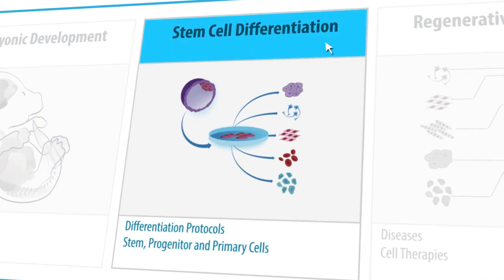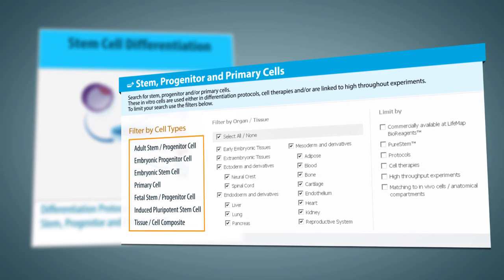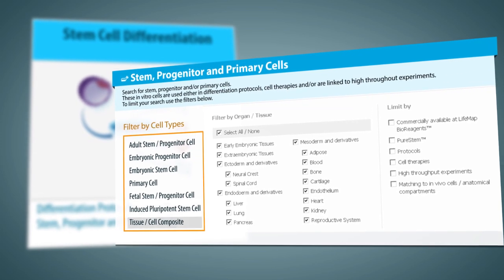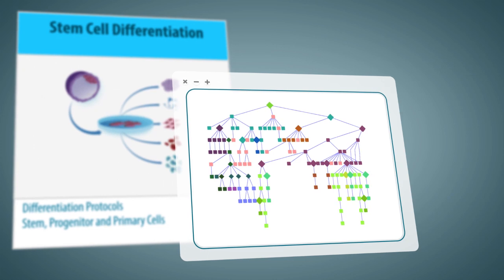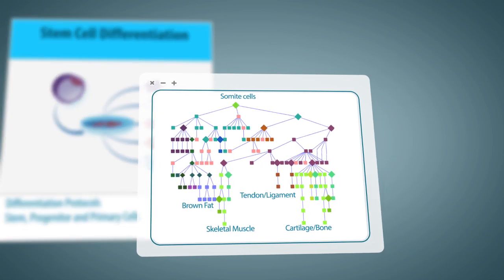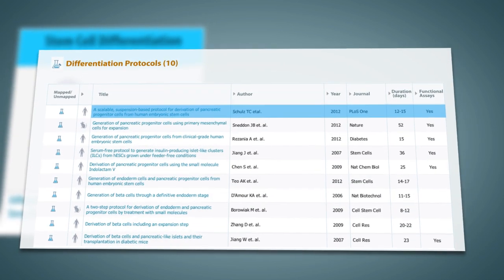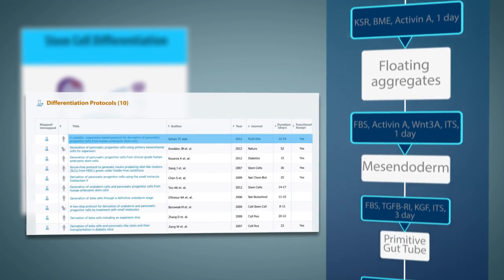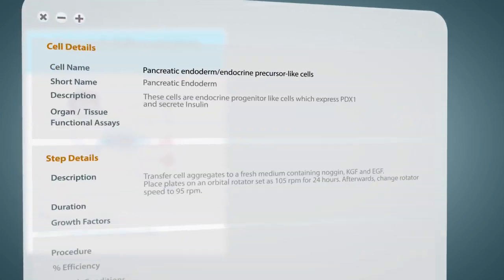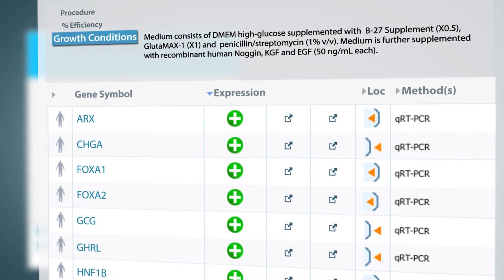Now let's explore our stem cell differentiation module. Our stem cell section provides molecular information for various types of stem, progenitor, and primary cells. Using advanced bioinformatics tools, these cells are matched to in vivo cells based on gene expression similarity. Differentiation protocols are presented using an interactive step-by-step graphical viewer, providing information about functional assays, growth factors, growth conditions, and gene expression data.